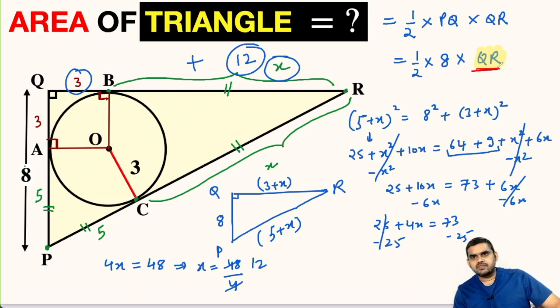So let us substitute 15 here. In place of QR, 15. This will be 4 times, then 15 multiplied with 4 is 60. So 60 square units, this is the area of this triangle.